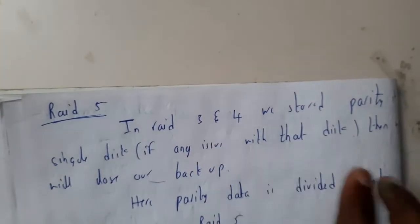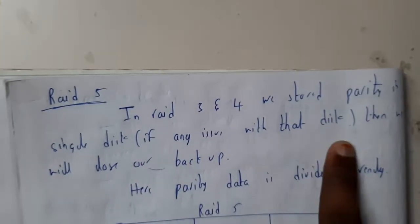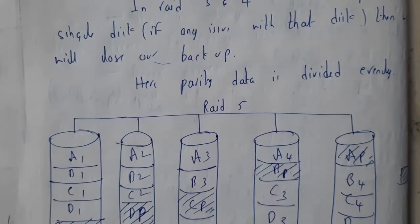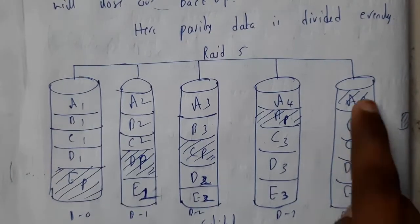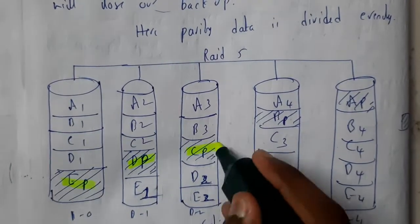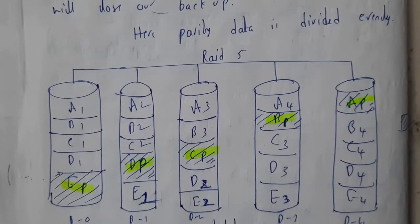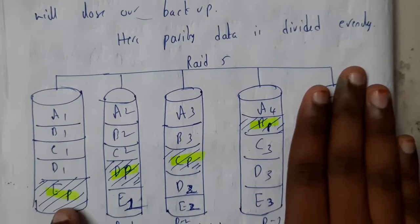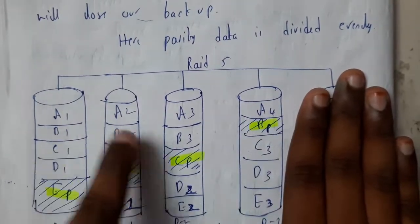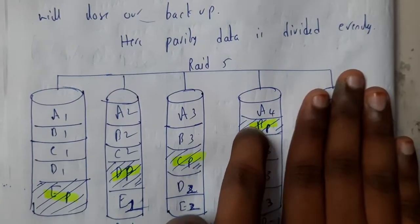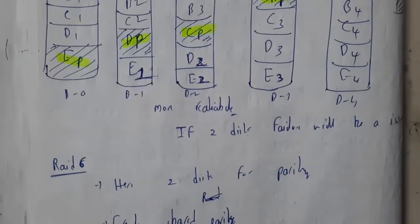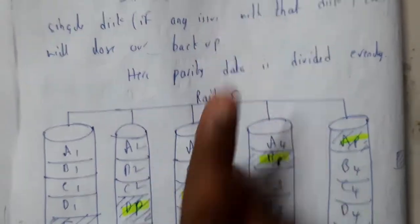The main issue with RAID 4 is: what if two disks crash? In RAID 3 and RAID 4, the parity is stored in a single disk, so if that disk has an issue we lose the backup ability. In RAID 5, the parity data is divided evenly within all the disks. If a disk fails — say one disk is gone — we still have a1, a2, a3, a4 and parity values like b1, b2, b3, bp spread across disks, so we can recover data. RAID 5 is more reliable than RAID 3 and RAID 4.